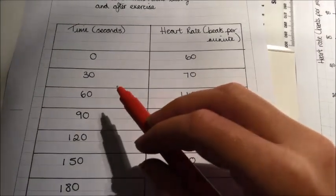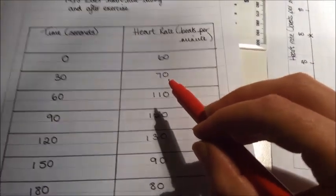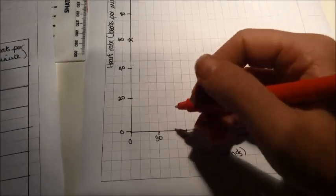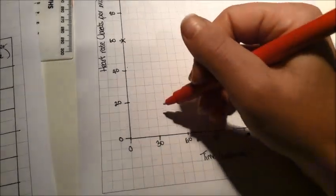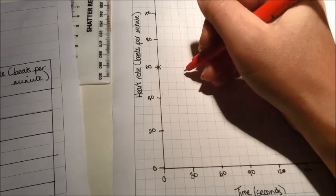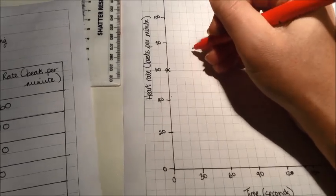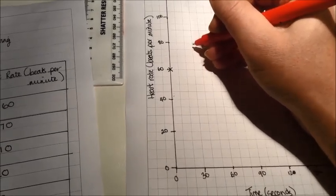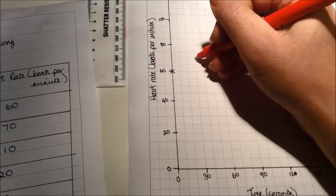The next bit of data: 30 seconds, my heart rate was 70 beats per minute. So we find our 30 seconds here, and we have to go up to find 70. Now, on this, we have 60 marked here and we have 80 up here. 70 is going to be in the middle, which is there.